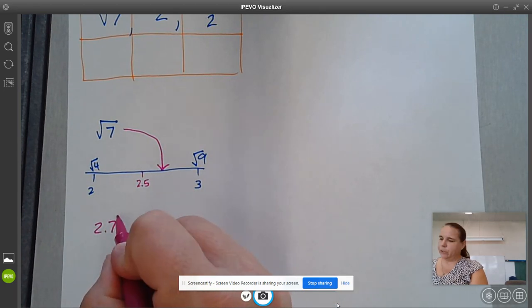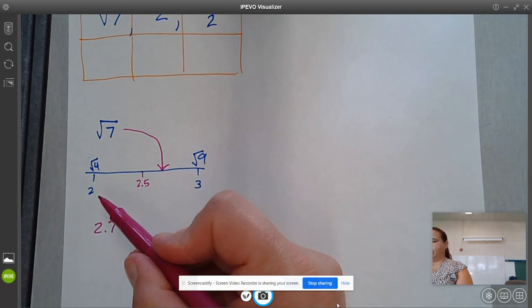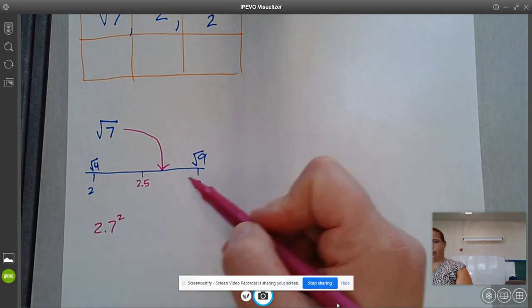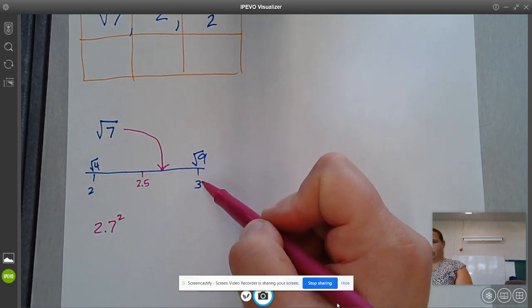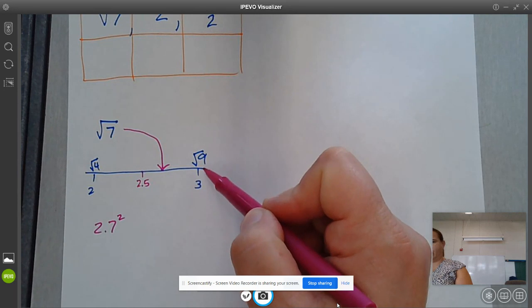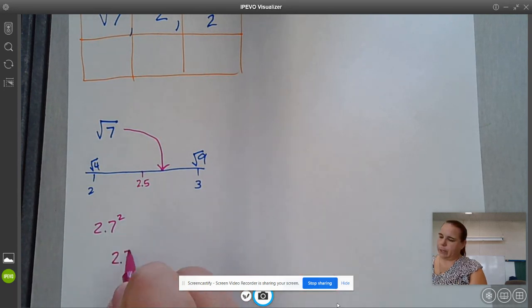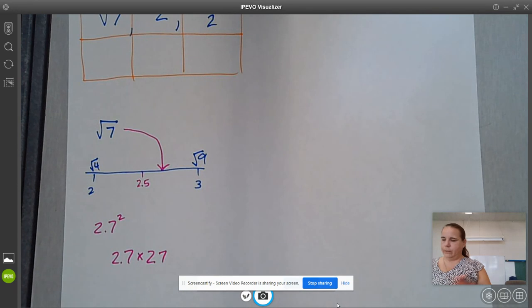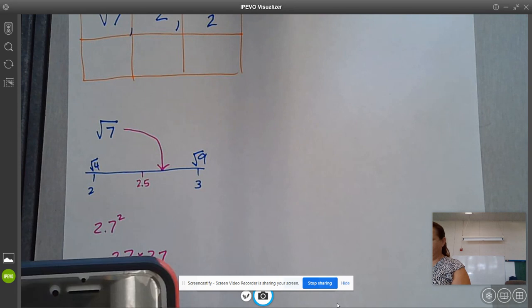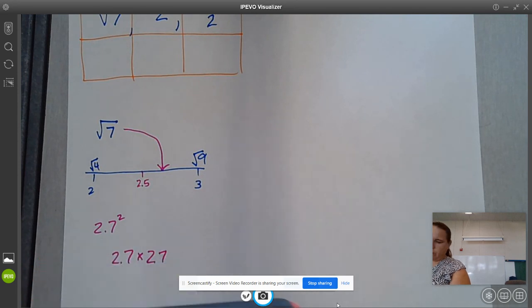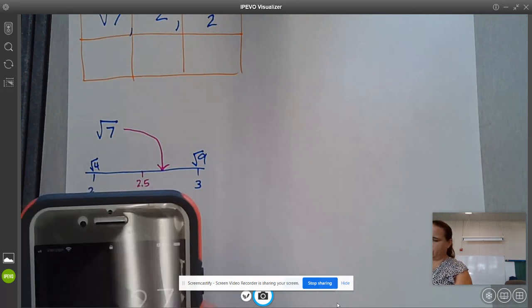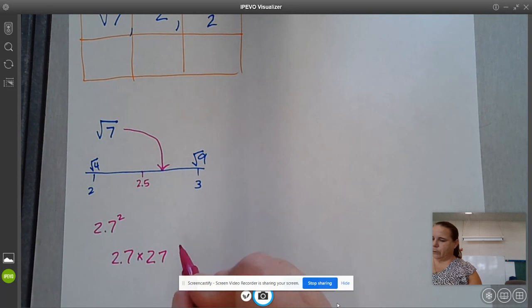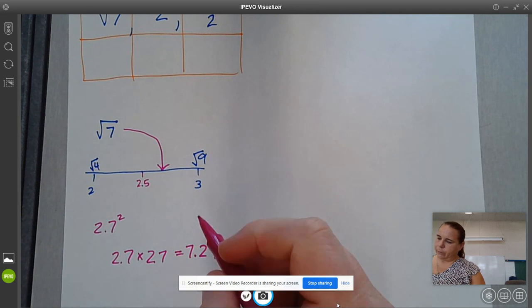That's what I'm going to test. I need to take 2.7 squared, because 4 is 2 squared, and 3 squared is 9. So 2.7 times 2.7, that's 7.29, so that's actually a little too much.